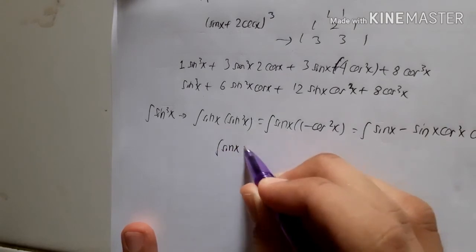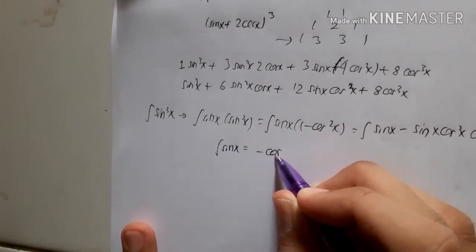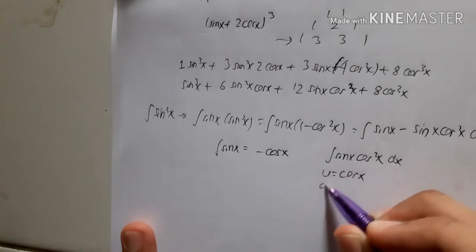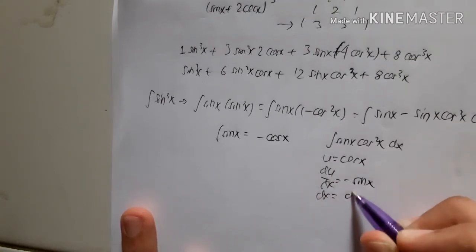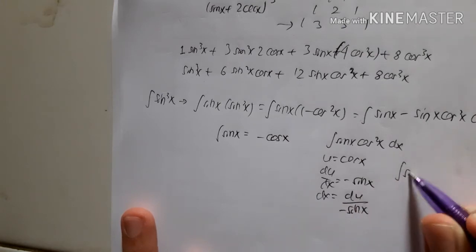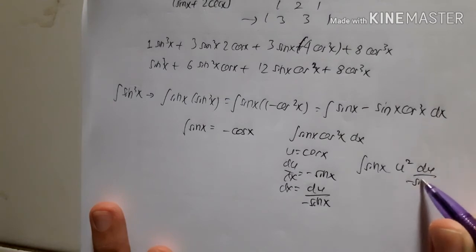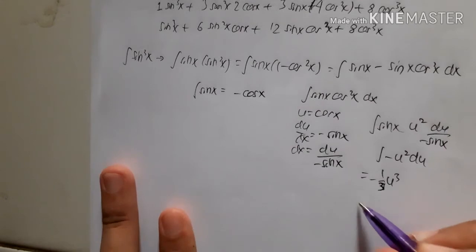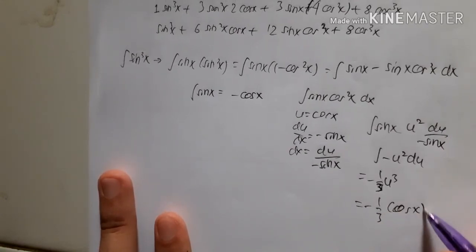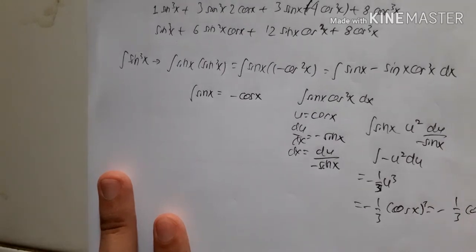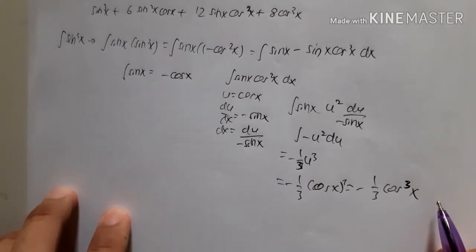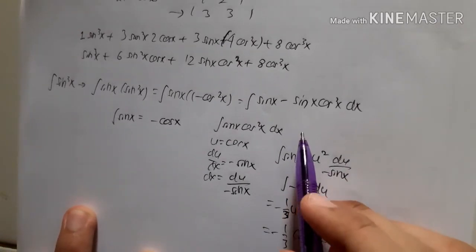Integrating term by term: the integral of sin x is −cos x. For the integral of sin x·cos²x, let u = cos x, then du/dx = −sin x, so dx = du/(−sin x). The integral becomes −∫u² du = −(1/3)u³ = −(1/3)cos³x. So the integral of sin³x is −cos x + (1/3)cos³x.